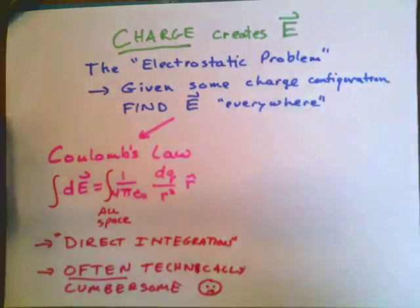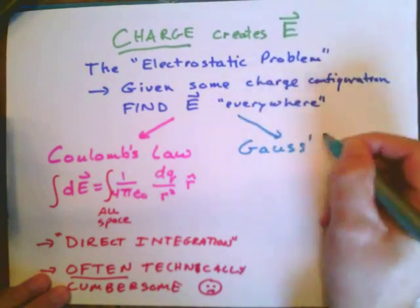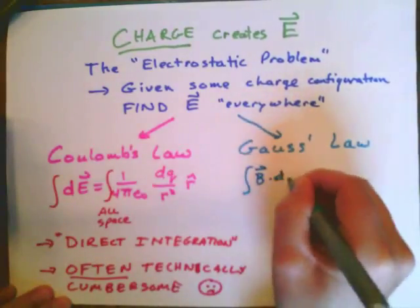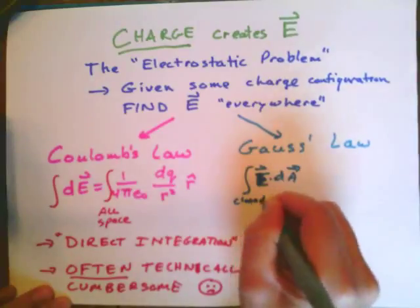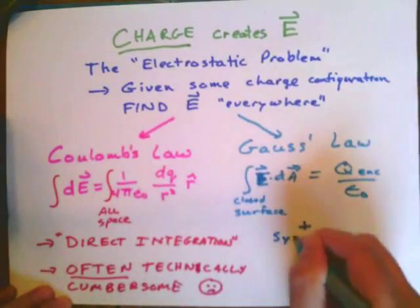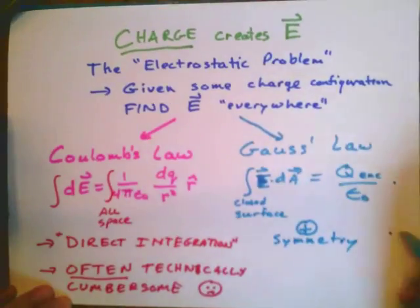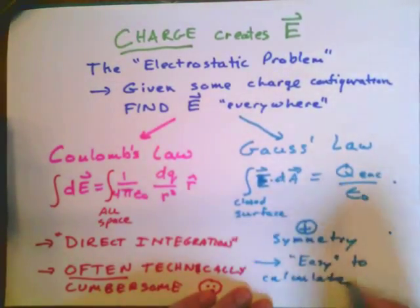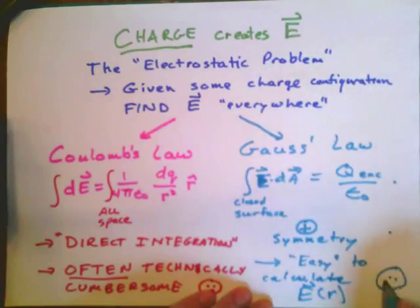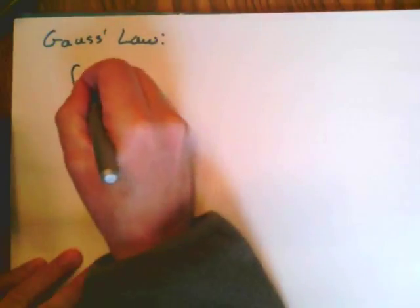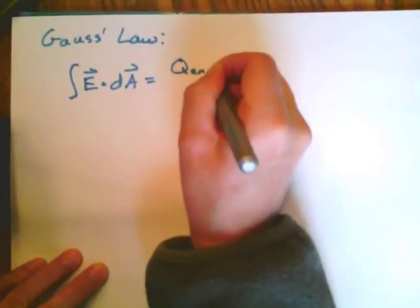Today we're going to introduce an alternate scheme called Gauss's law, which can be written in this form: the integral of E dot dA over some closed surface is equal to the enclosed charge over epsilon naught. Adding symmetry, we can often find an easy solution to calculate the electric field — in general much easier than direct integration.